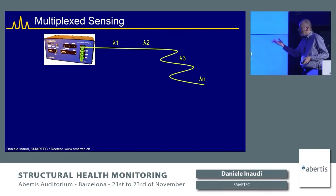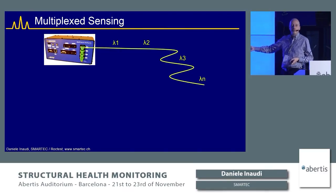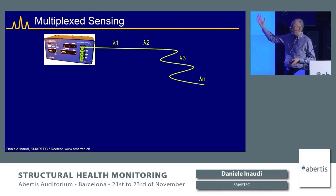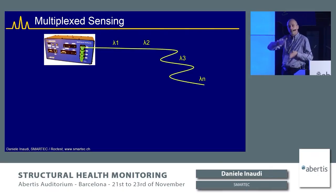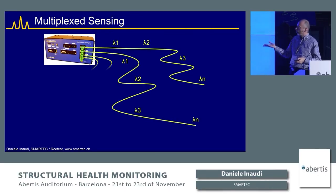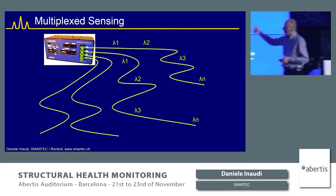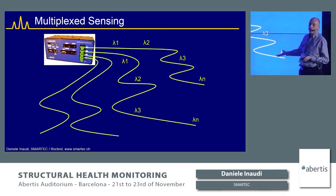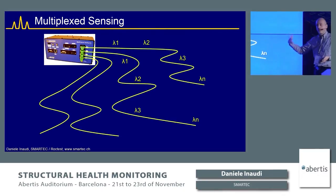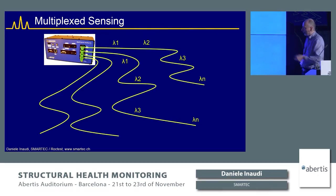The beauty of this technology is that gratings with different pitches can be placed along one fiber — typically 10 to 20 sensors per fiber — each reflecting at a different wavelength so the interrogator can address each sensor individually, like a radio tuning to different frequencies. With a four-channel instrument, you could have up to 80 sensors total.